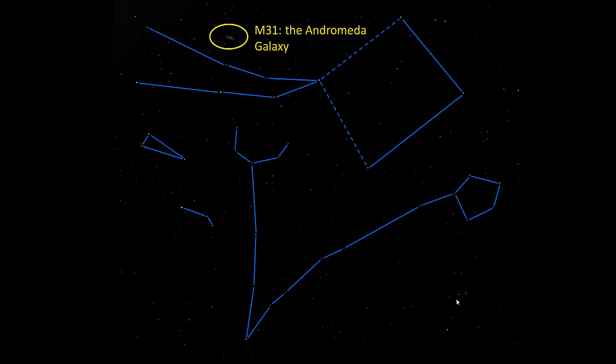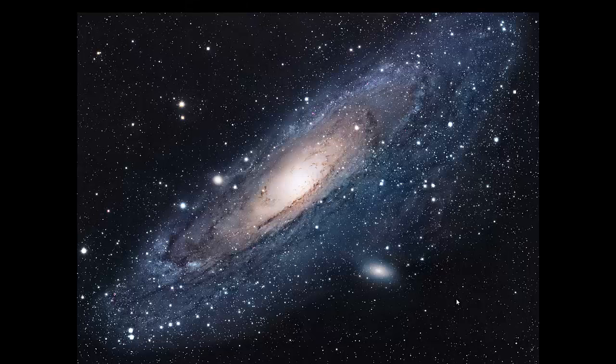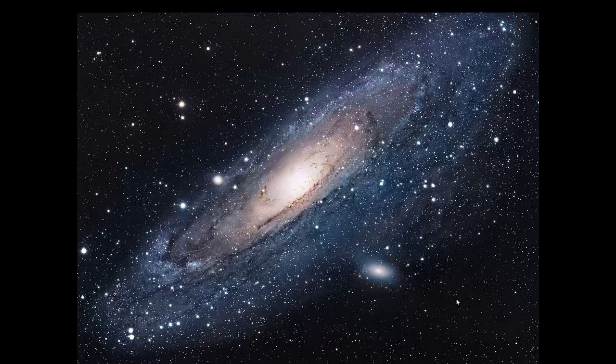And up in this region of the sky within that ellipse up there is M31, the Andromeda galaxy. Here's a picture of it. Quite photogenic. When you take long time exposures. When you actually look at this through a telescope or binoculars, pretty much all you see is just the central brightest region there. It's hard to see the outer regions.